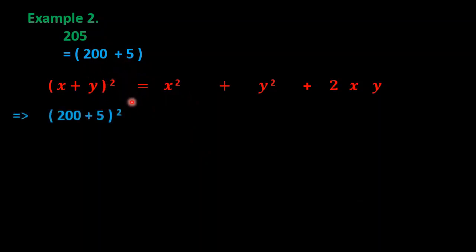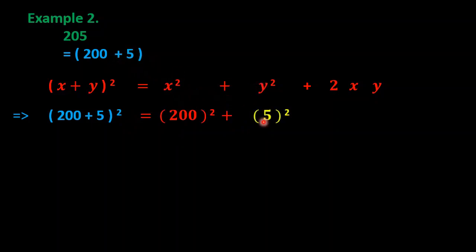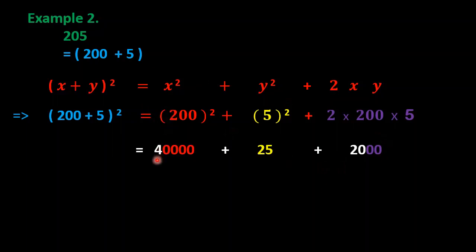Substituting x = 200 and y = 5 into the right-hand side, we write: 200² + 5² + 2 × 200 × 5. For 200²: 2 × 2 = 4, and we double the two zeros to get four zeros, giving 40000.